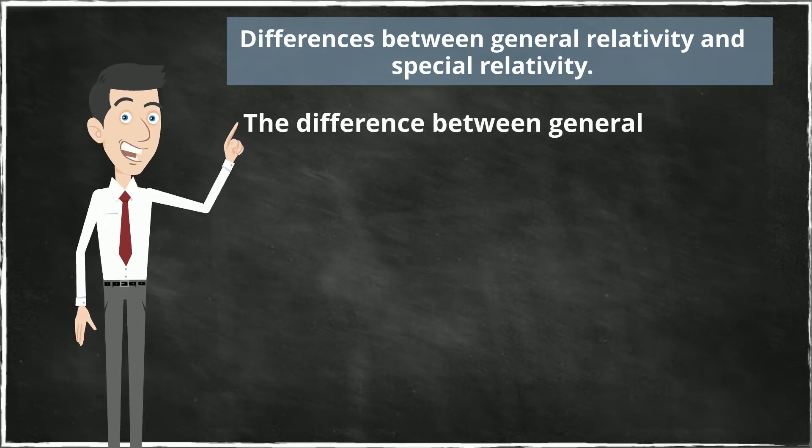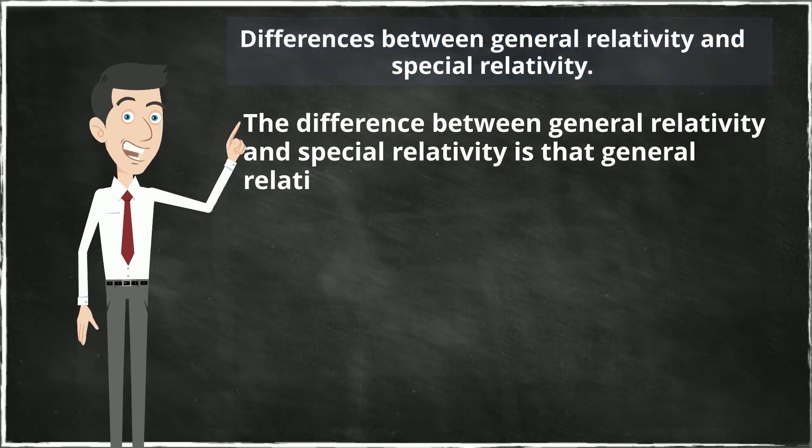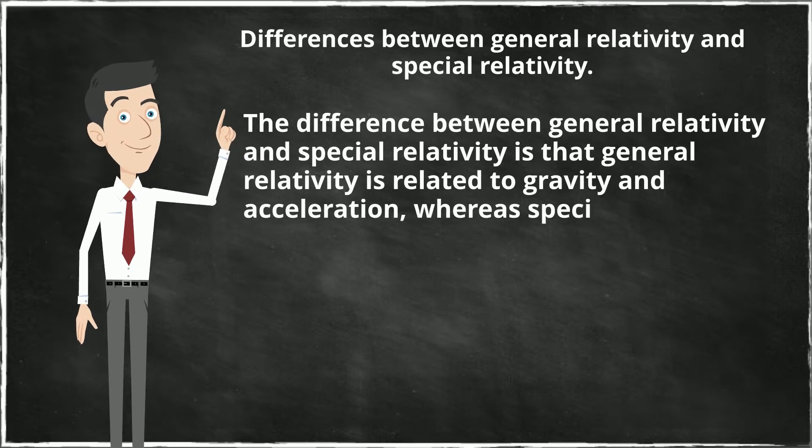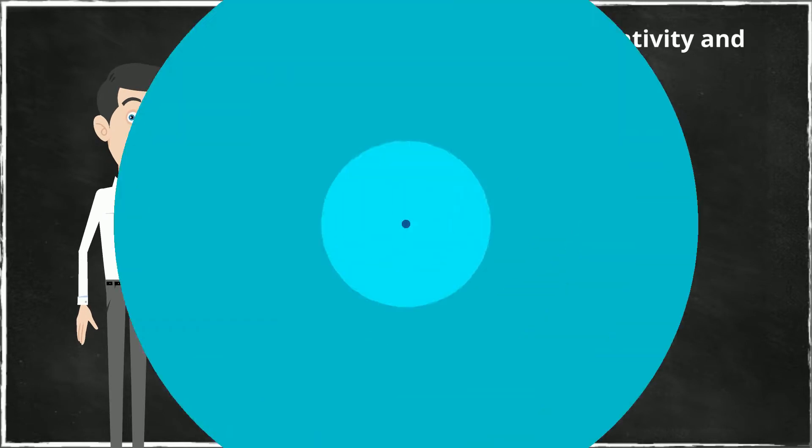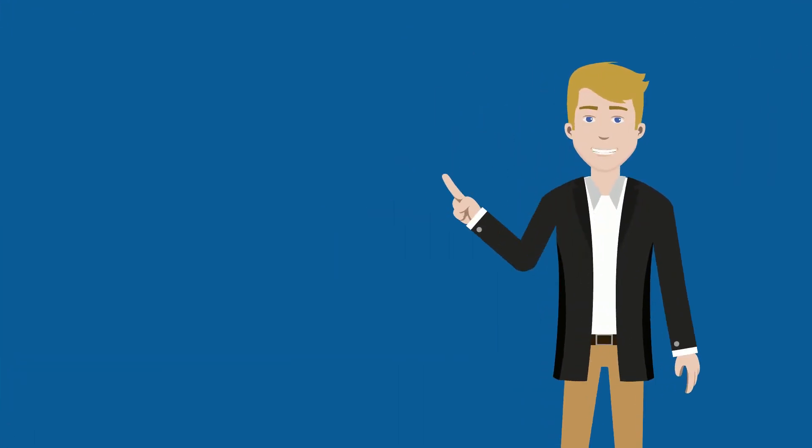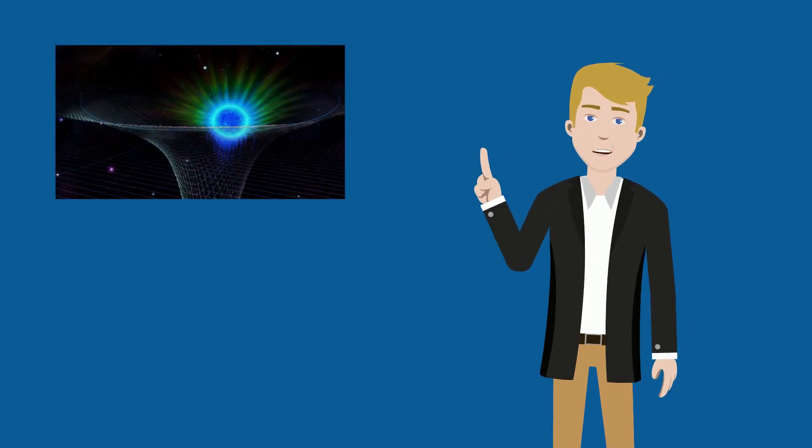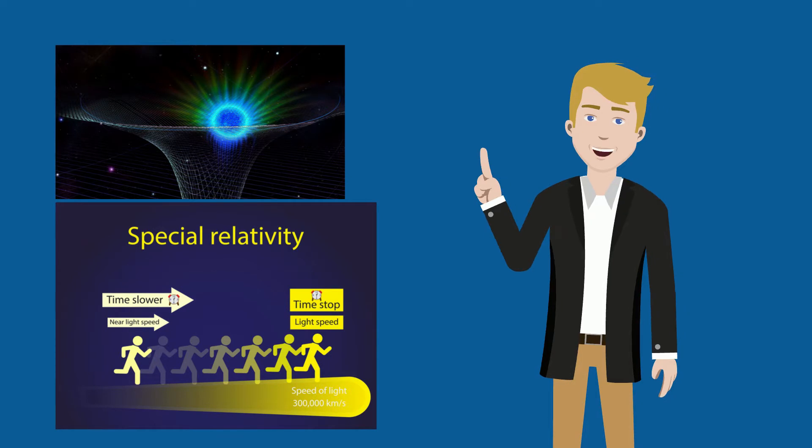The difference between general relativity and special relativity is that general relativity is related to gravity and acceleration, whereas special relativity is related to speed and time. General relativity shows the relation between observer and acceleration, whereas special relativity shows us the relation between observer and constant speed when in motion.